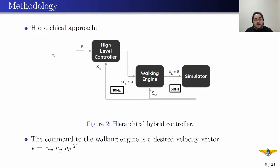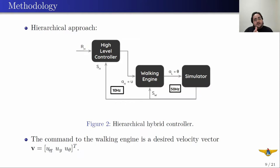We used a hierarchical approach, as I said before, where we had a high-level controller that commands a model-based walking engine at 10 Hz, and the walking engine computes joint speeds which are sent to the simulator at 50 Hz. The command to the walking engine is a desired velocity vector, so we have a forward speed in the local coordinate system of the robot, a sideways speed, and a turning speed. This makes this engine what we call an omnidirectional walking engine.